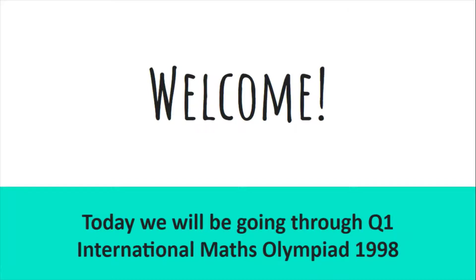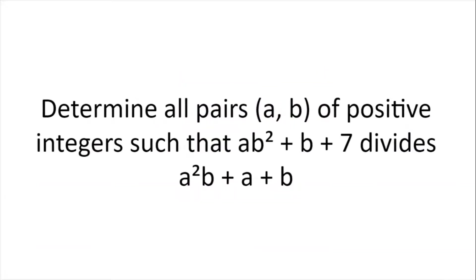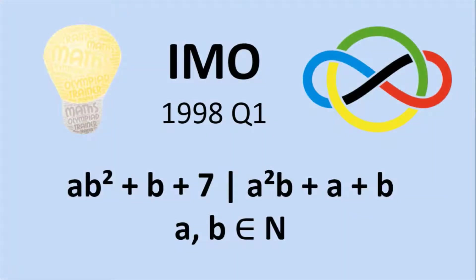Welcome. Today we'll be going through question 1 from the International Maths Olympiad, 1998. Determine all pairs a and b of positive integers such that ab² + b + 7 divides a²b + a + b. Please pause the video here and have a think about the problem on your own before proceeding to the hints and solutions.